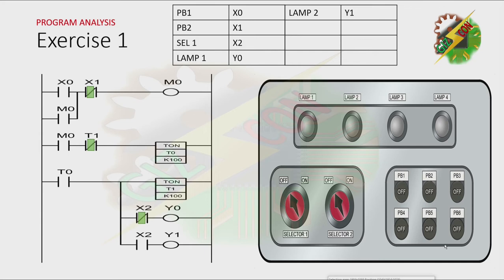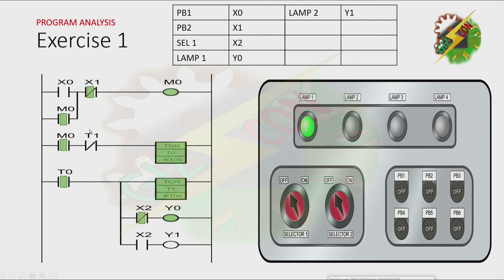Let's analyze the program first. This is my program. By pressing PB1, it will allow M0 to turn on and it will not turn off unless X1 is pressed. And because M0 here is on and T1 here is on also, timer 0 will start after 1 second. And because timer 0 is now on, Y0 will turn on. And after that, timer 1 will turn on after 1 second. And because T1 is a normally closed contact, it will turn off and that will cause T0 to turn off. To turn it off, we need to press X1.